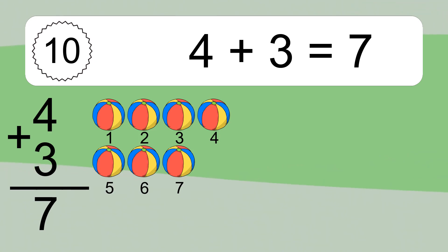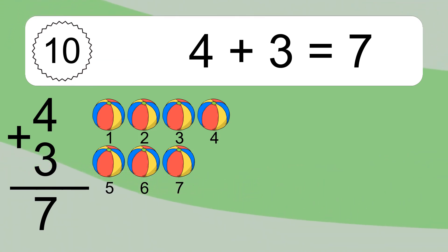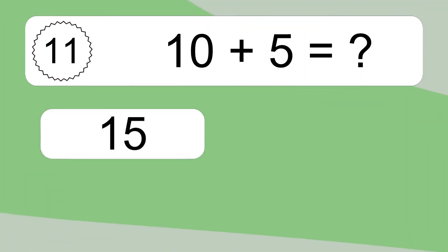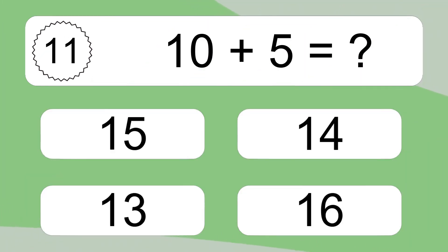4 plus 3 equals what? 4 plus 3 equals 7. Let's count it: 1, 2, 3, 4, 5, 6, 7.